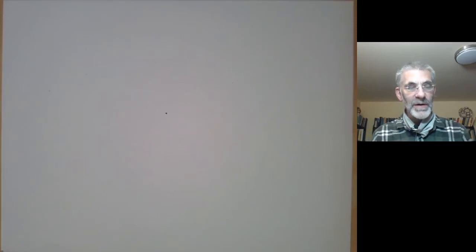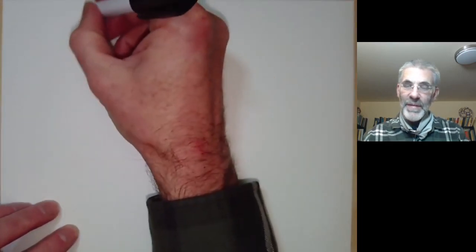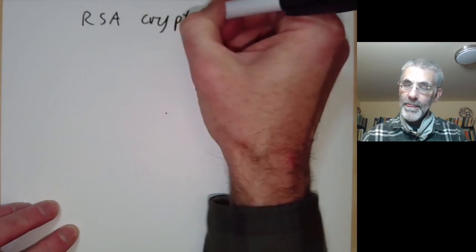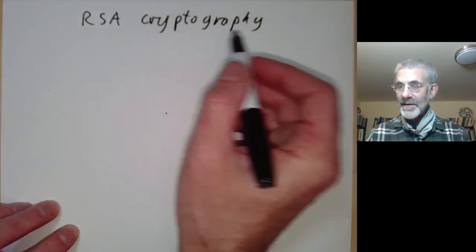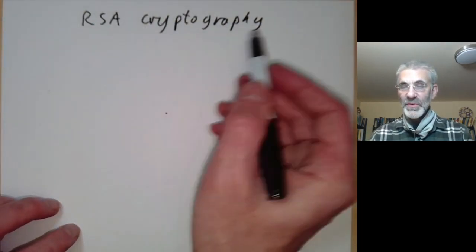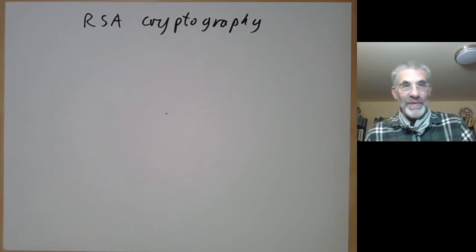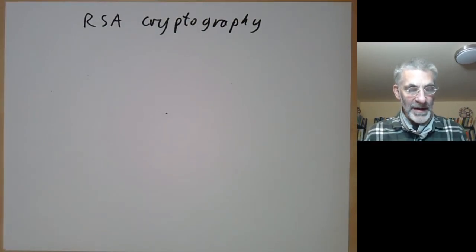This talk is part of an online undergraduate course on the theory of numbers and will be about RSA cryptography. Cryptography means hidden writing—basically you want to send someone a coded message that other people can't read.